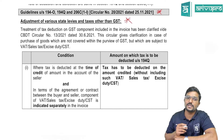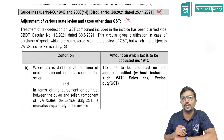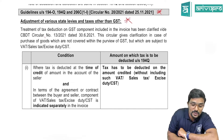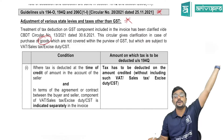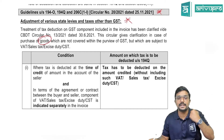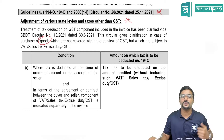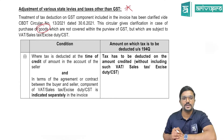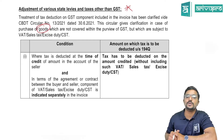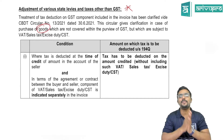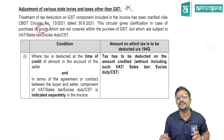Treatment of tax deduction on the GST component included in the invoice has been clarified by CBDT Circular Number 13/2021 dated 30th June 2021. This circular gives clarification in case of purchase of goods not covered within the purview of GST, which may be subject to VAT, sales tax, excise duty, or CST. In the condition where TDS is deducted at the time of credit of the amount in the account of the seller, and the tax component is separately indicated in the invoice, tax has to be deducted only on the amount credited without including such VAT, sales tax, excise duty, or CST.